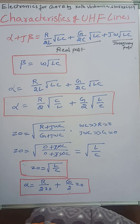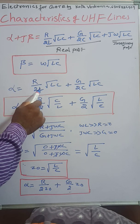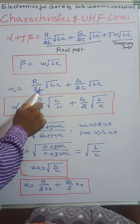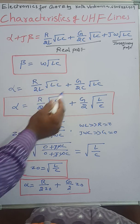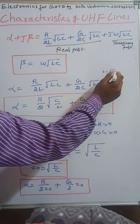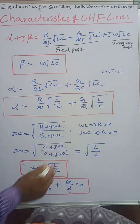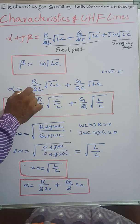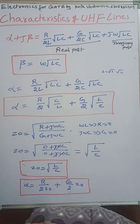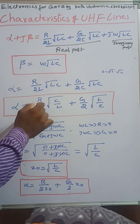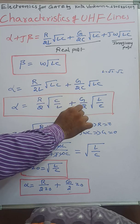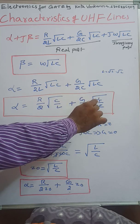Simplifying the alpha expression: since L = √L · √L, the √L terms cancel, giving alpha = R/2 · √(C/L) + G/2 · √(L/C). This is the attenuation constant value for UHF lines.